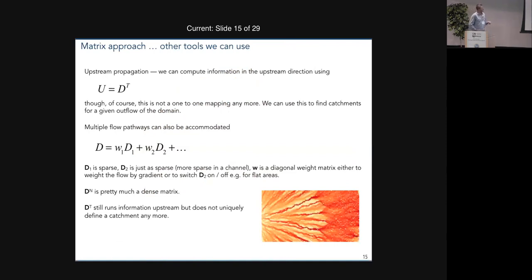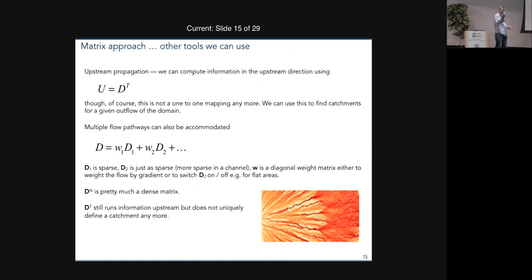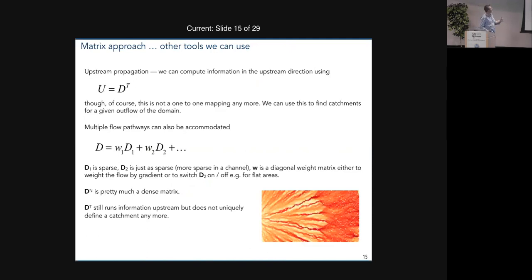If we can do that, some nice things happen. For example, if we want to go backwards — start at the output points and propagate information upstream — then we just use the transpose of the original C matrix. That's not a one-to-one mapping anymore, but that's what you want: take each output point and move to every neighbor it has. So that's a trivial operation. You can find the transpose of the matrix immediately and multiply it out using exactly the same routines.